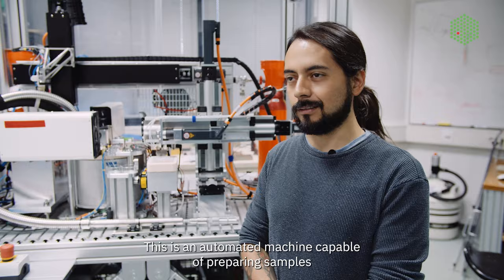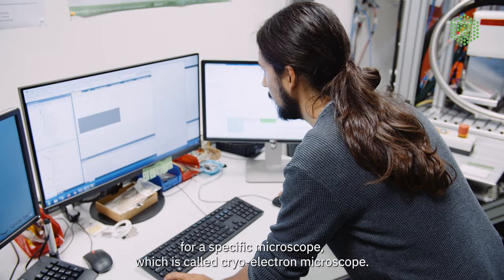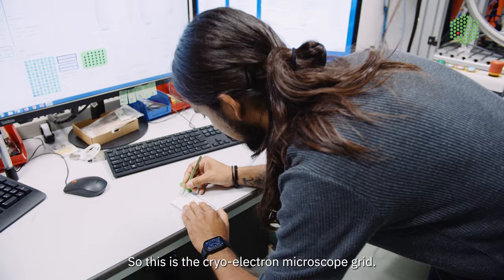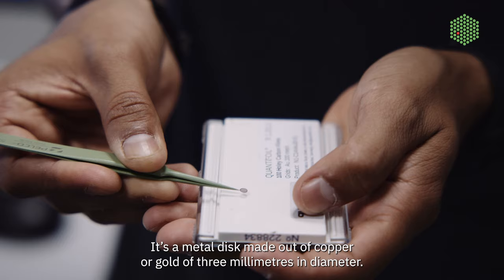This is one of our projects. This is an automated machine capable of preparing samples for a specific microscope, which is called cryo-electron microscope. So this is the cryo-electron microscope grid. This is what holds the sample. So it's a metal disc made out of copper or gold of three millimeters in diameter.